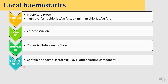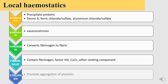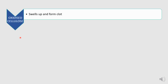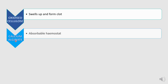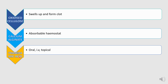We have fibrin glue, which contains fibrinogen, factor VIII, calcium, and other clotting components — all these help with hemostasis. Then collagen, which promotes aggregation of platelets, thereby forming clots. Oxidized cellulose should be used dry because it swells up and forms the clot. Calcium alginate is also an absorbable hemostat. Tranexamic acid can be used orally, IV, or topically.